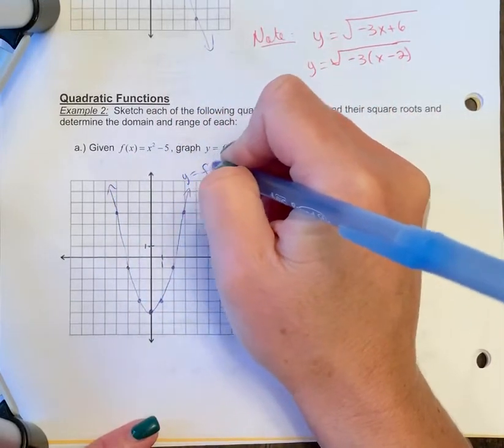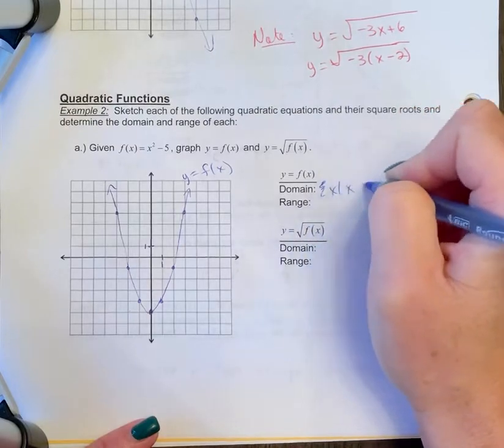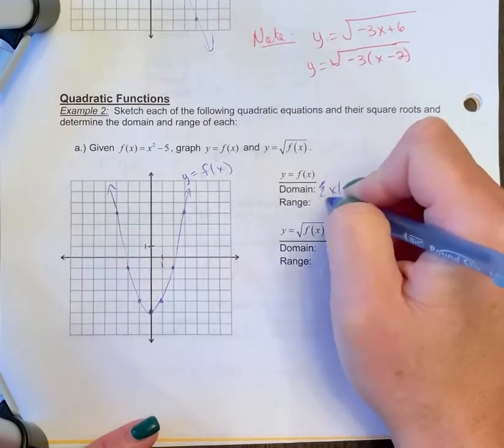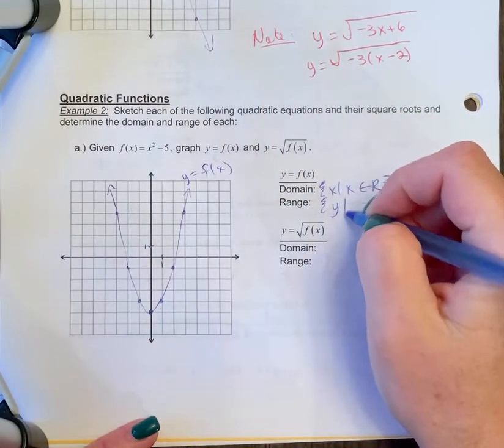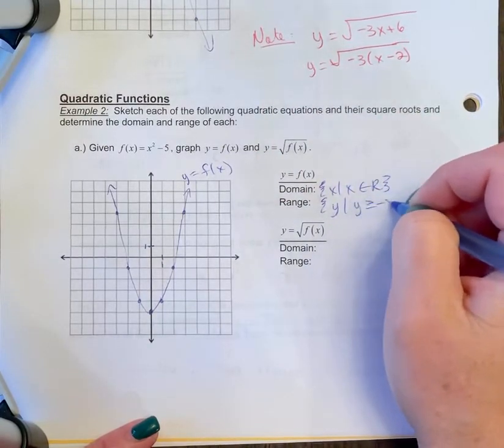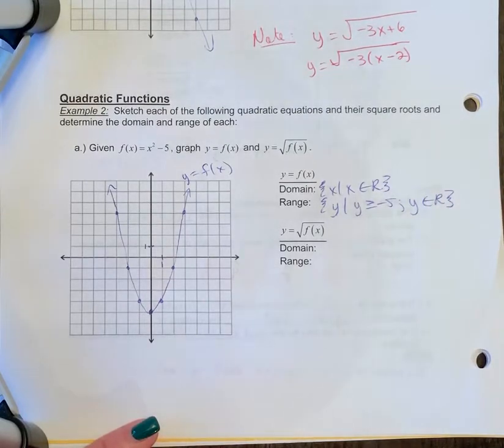Okay, so we're going to call that y equals f of x, and we're going to fill in our domain and range like it asks. So the domain is just x element of reals like you're used to. And the range is everything above negative 5. So y is such that y is greater than or equal to negative 5, where y is an element of real numbers.